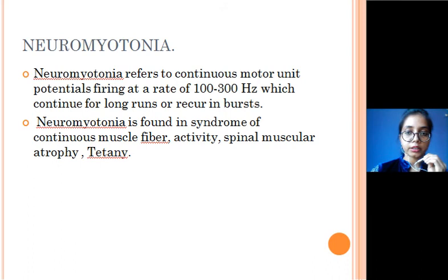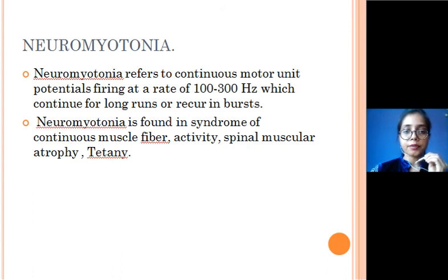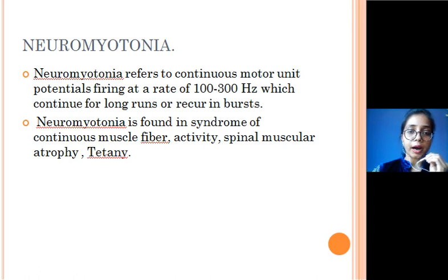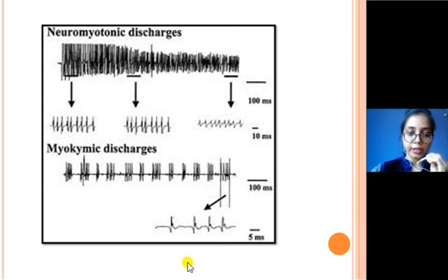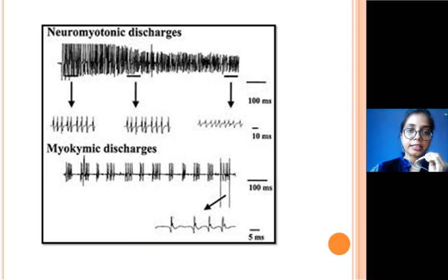Neuromyotonia refers to motor units that are continuously active, firing at a rate of 100 to 300 hertz. This activity continues for long runs, or sometimes there is a break and it reoccurs in bursts. Neuromyotonia is found in syndromes of continuous muscle fiber activity such as muscular atrophy or tetany. As you can see here, the neuromyotonic discharges show no gap — it is a continuous discharge. This was a brief overview of the abnormal potentials seen in the electrical silence zone of the EMG examination.